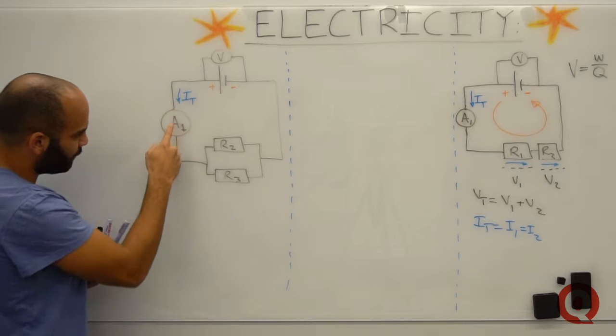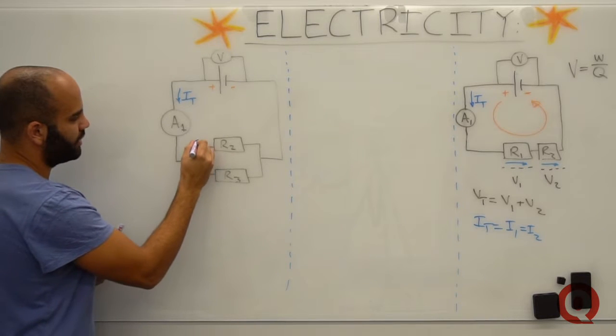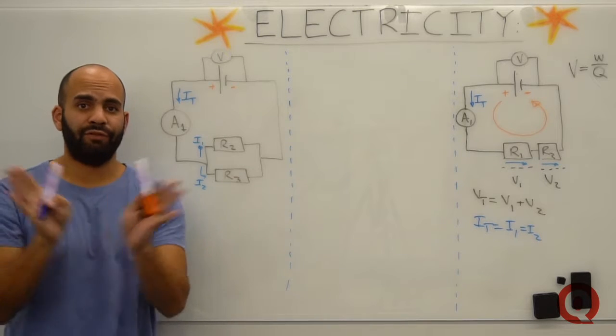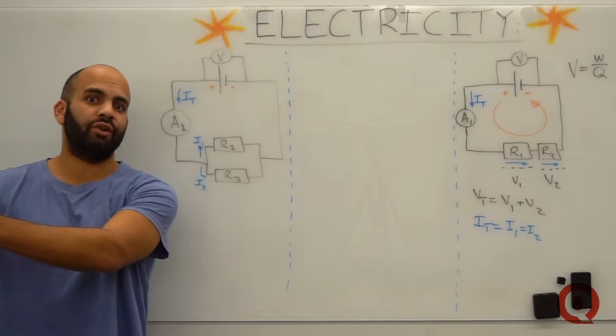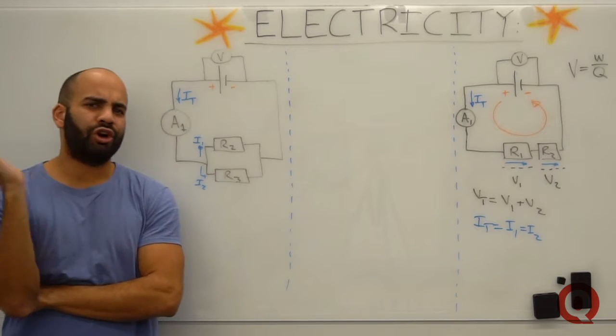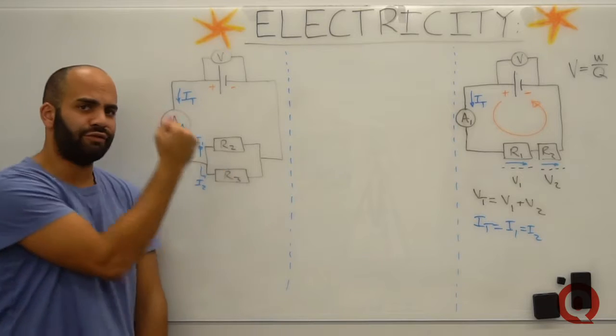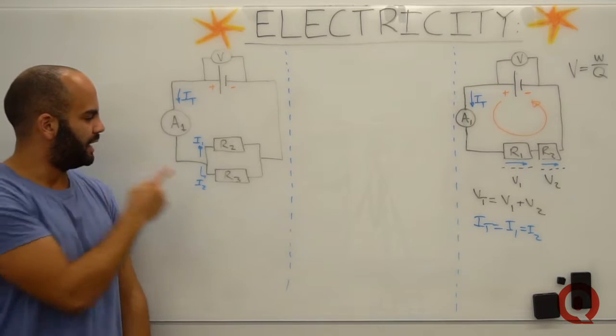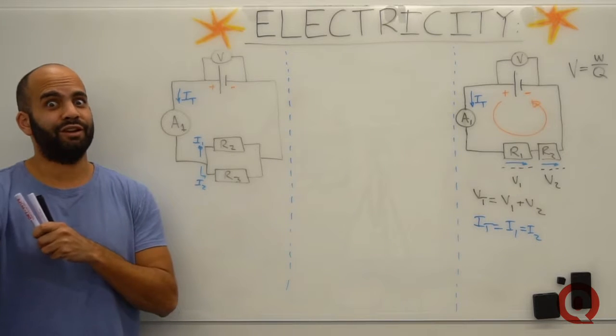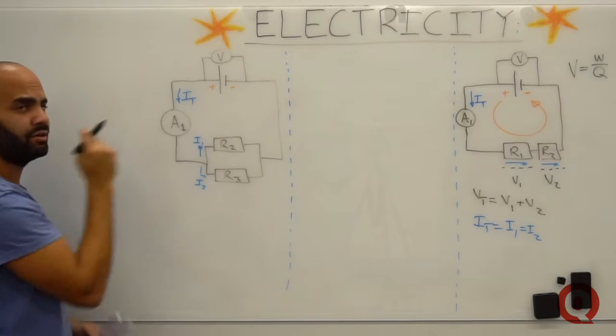So when my current flows down here, remember I'm flowing counterclockwise, conventional current, my current will split. I have one here and I have two. So think about it as if you were at a river and the river forked. A certain portion of the river or the volume would flow to the right, and a certain portion would flow to the left, which is what's happening here. Remember, current or charge moving through a circuit is very lazy. It always prefers to go to the path of least resistance. So if R2 is very small, a lot of current will flow there.